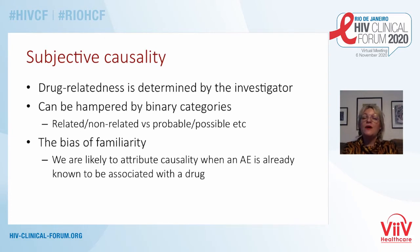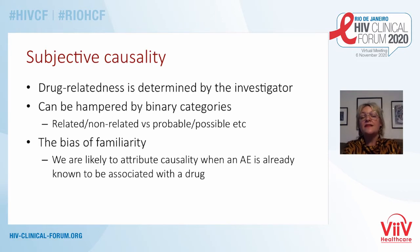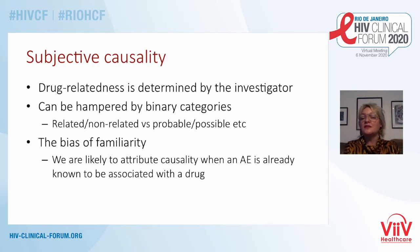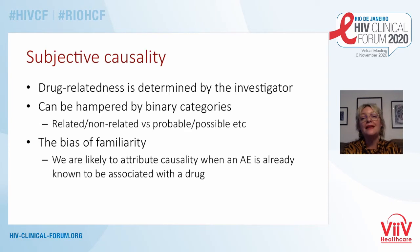Causality — whether a drug-related adverse event is important or not — is decided by the investigator, and this can be difficult. In some studies, you have to say whether a side effect is related or not related; you don't have the options of probable or possible. There's also the bias of familiarity: we may be more likely to attribute an adverse event to a drug if it's an already known adverse event, whereas if it's new, we may be less likely to decide that it's drug-related.